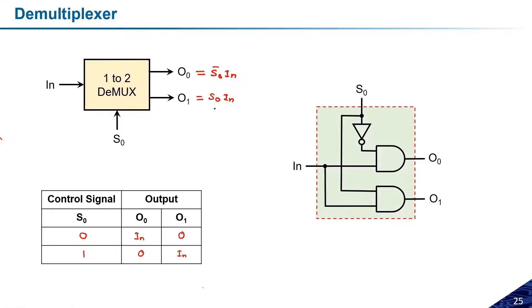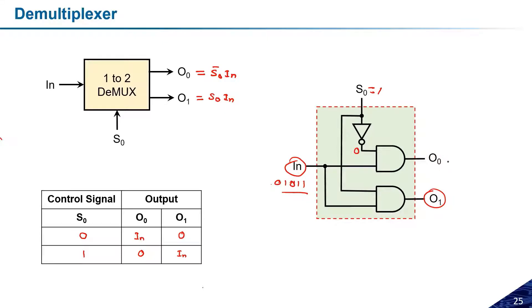Based on the select line, the input is transferred to either O0 or O1. If S0 = 1, the first AND gate output will always be zero regardless of the input, so O0 is always zero. But because S0 = 1, the second AND gate passes the input directly as O1. So the input signal — say 0, 1, 0, 1, 1 — will be passed through as-is to the selected output.